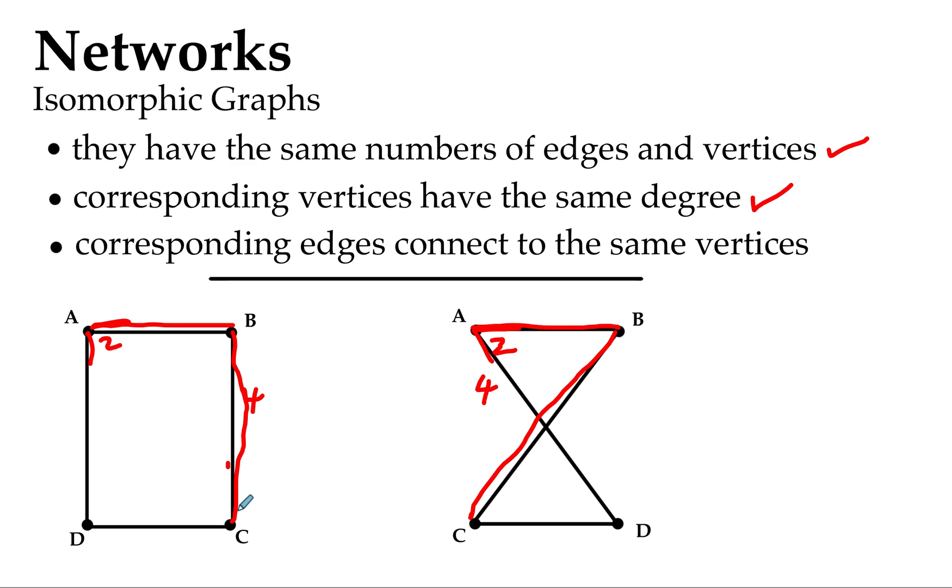We have C to D being nicely connected, and we do it down there as well. And A and D are connected, and so they are in the other diagram. So we've ticked off all those three conditions that lead us to believe that these are a pair of isomorphic graphs.